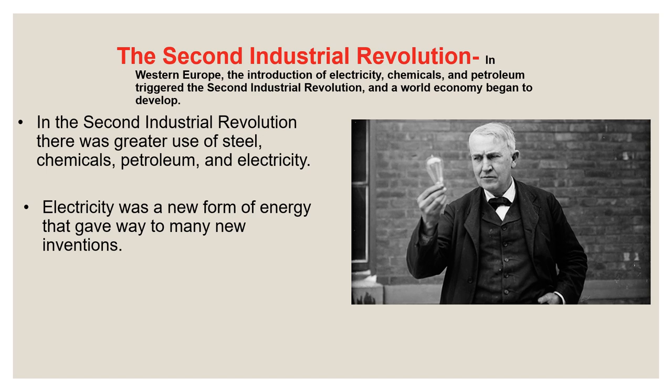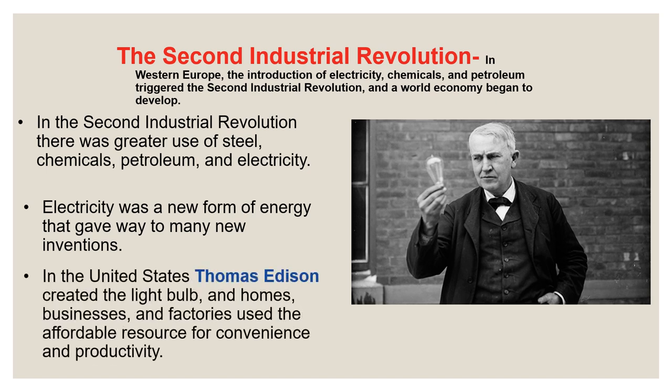Now let's talk about how the Second Industrial Revolution contributed to mass society. In Western Europe, the introduction of electricity, chemicals, and petroleum triggered the Second Industrial Revolution and a world economy began to develop. The first industrial revolution, beginning in the mid-18th century in England and spreading to the continent by the early 19th century, relied primarily on steam power. In the Second Industrial Revolution, the power sources were electricity, chemicals, and petroleum. We see the development of a combustible engine rather than a steam-powered engine, with greater use of steel, chemicals, petroleum, and electricity.